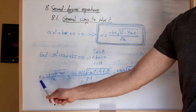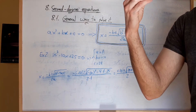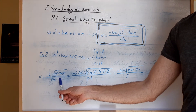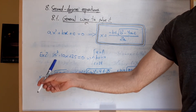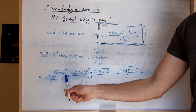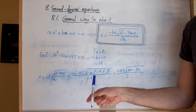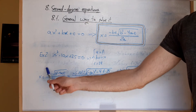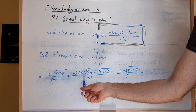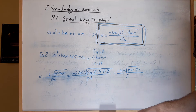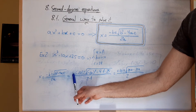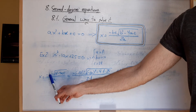Y luego sustituimos en la fórmula. Primero copiamos la fórmula, porque quiero que la aprendáis de memoria. Es obligatorio poner esta fórmula: menos b más-menos raíz cuadrada de b cuadrado menos 4ac partido por 2a. Y una vez tengamos la fórmula, sustituimos los valores de a, b y c por sus correspondientes valores. Este menos se lleva aquí, se copia y se pega tal cual, y ahora tenemos b.